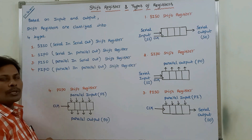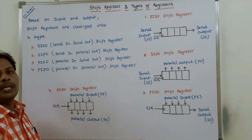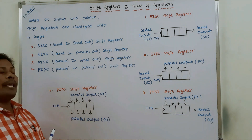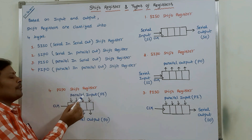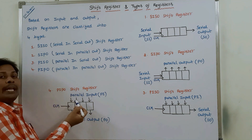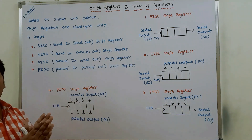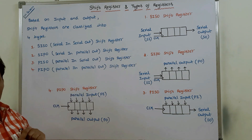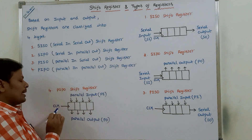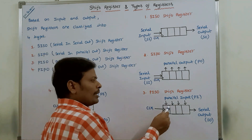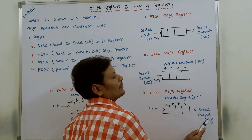A PIPO — parallel in parallel out shift register — allows only parallel input and produces only parallel output. This shift register enters the input data in parallel fashion within a single clock pulse and the data leaves out also in parallel fashion within a single clock pulse.